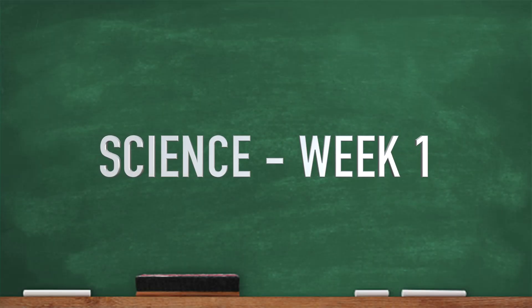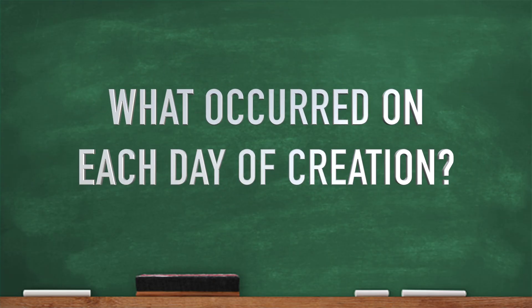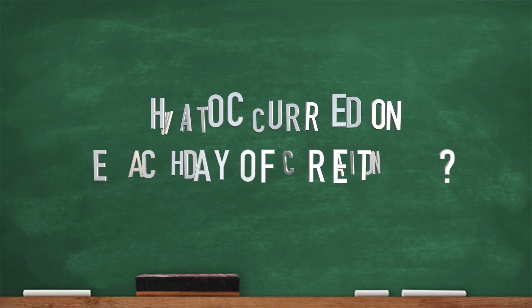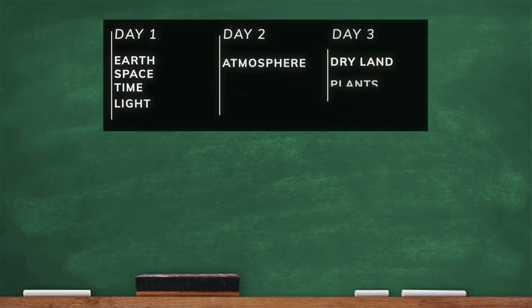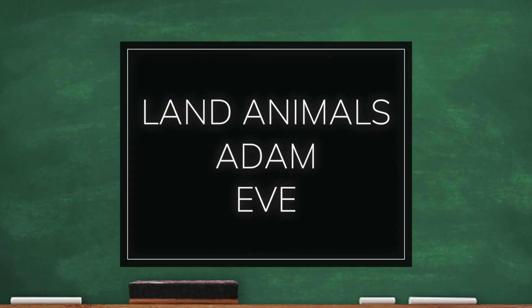Yes, science! What occurred on each day of creation? I think I know — it took six days. Day one: earth, space, time, light. Day two: atmosphere. Day three: land, plants. Day four: sun, moon, and stars. Day five: fish, sea creatures, and birds. Day six: land animals, Adam and Eve.